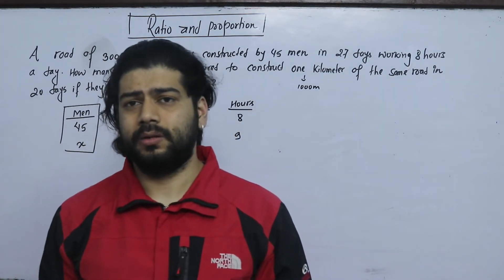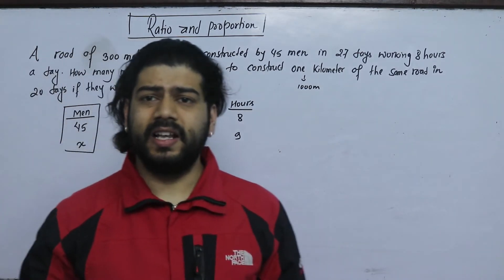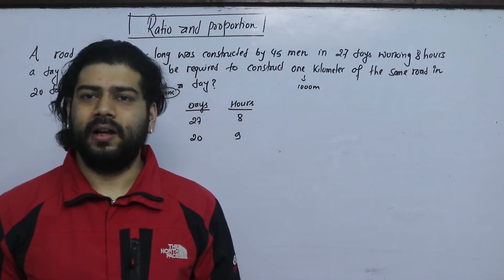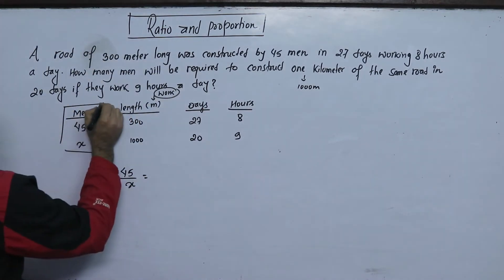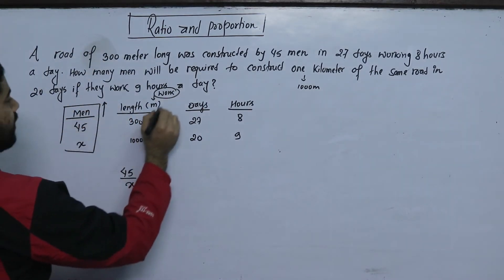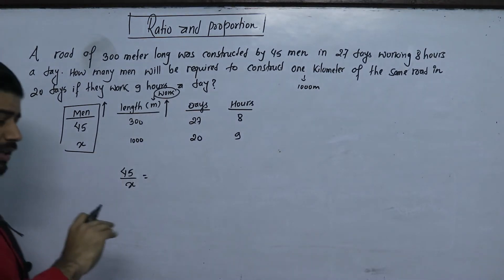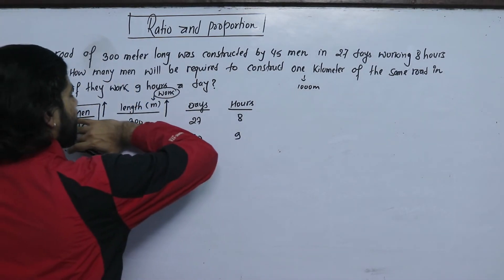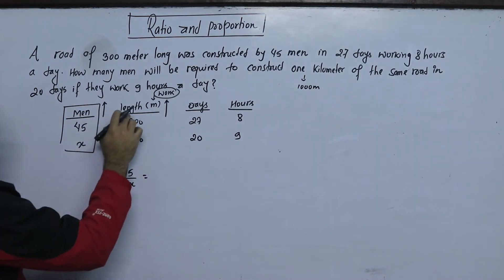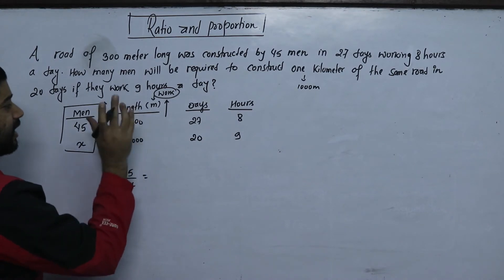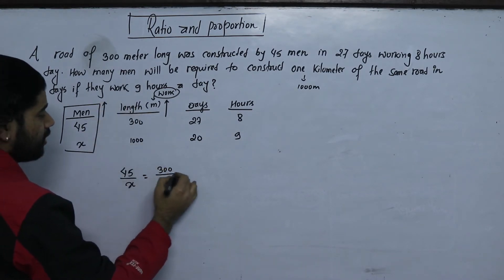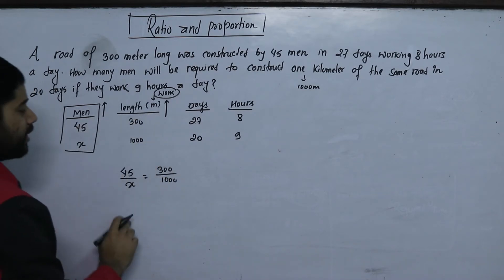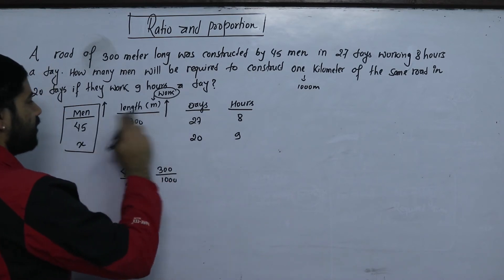If you want to make a road, you can set up the length ratio like this. In our previous class, we looked at a similar example. As we want to make a longer road, the ratio of lengths will be 300 upon 1000. This gives us the required number of men and days in proportion.